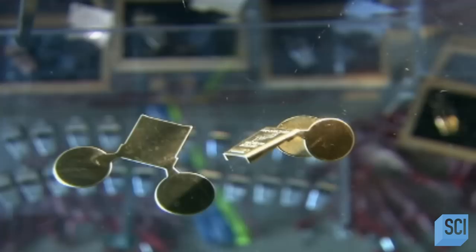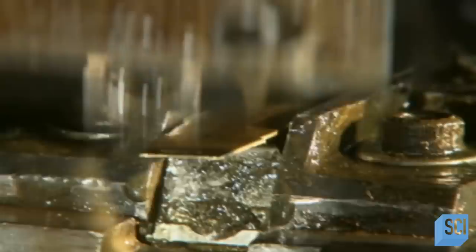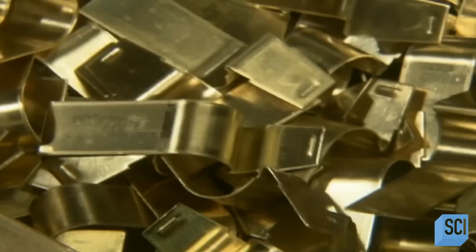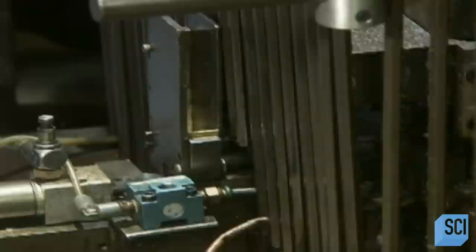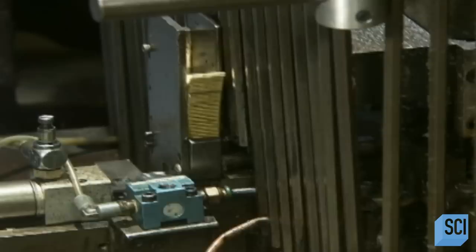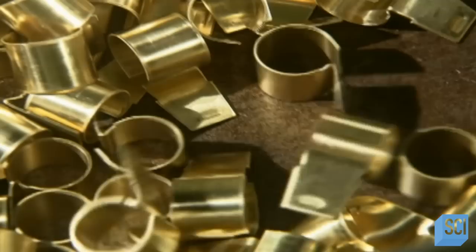Another brass sheet feeds a third press. This machine punches out and partially shapes the part that forms the rest of the whistle. It notches the tapered end, which will be the underside of the mouthpiece, giving your teeth something to grip. Now, a fourth press finishes shaping these pieces. It bends the other end into a circle to form the barrel. The two main parts of the whistle are now ready.